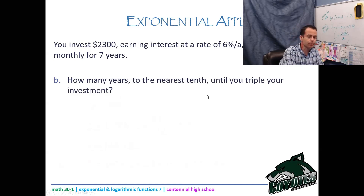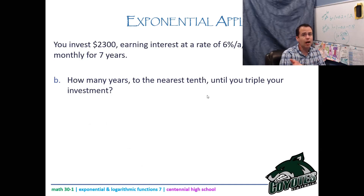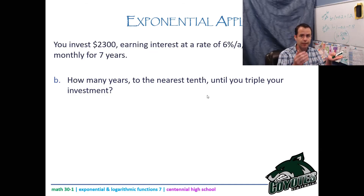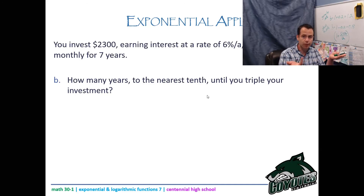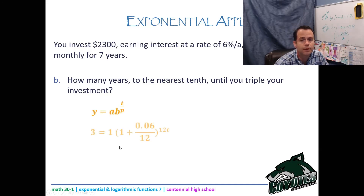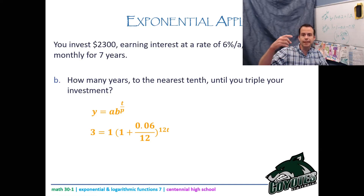Part b: how many years to the nearest tenth until you triple your investment? The starting amount doesn't matter — use a = 1 and y = 3 (or 2300 and 6900). Plug everything in; the exponent is 12t since we're compounding monthly. Divide both sides by 1, then switch to log form.